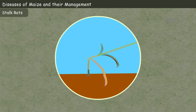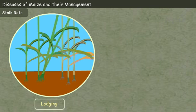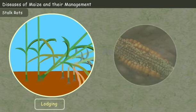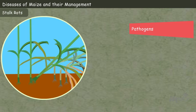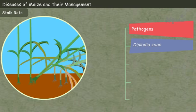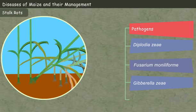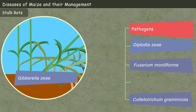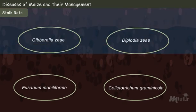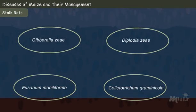Stalk rots of maize. When the plants are near maturity, the disease causes lodging and poor grain filling of grains in the cobs. The major pathogens that cause stalk rots are Diplodia zeae, Fusarium moniliforme, Gibberella zeae, and Colletotrichum graminicola. Among these, Gibberella zeae is considered to be the major causative organism of stalk rot.